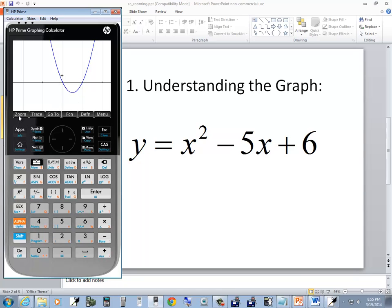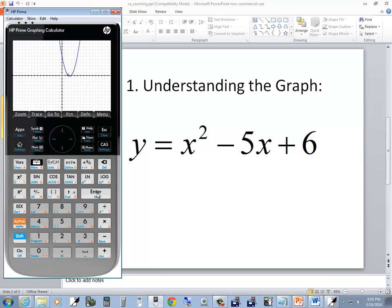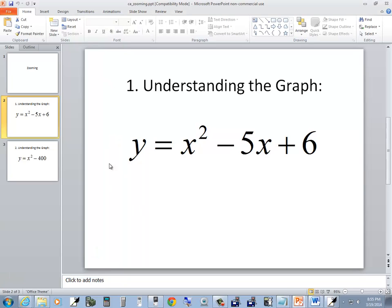Now again, to set it back to the default, you do zoom, you can do your up arrow, and we want to choose decimal. Took me a while to find that. I finally had to Google it and read about it, because I kept looking for a zoom default or a zoom standard like Texas Instruments, but I couldn't find it.